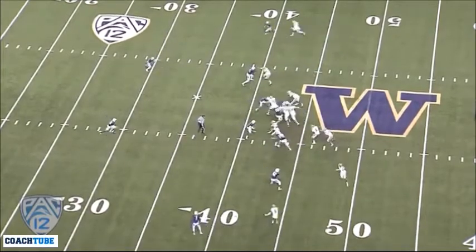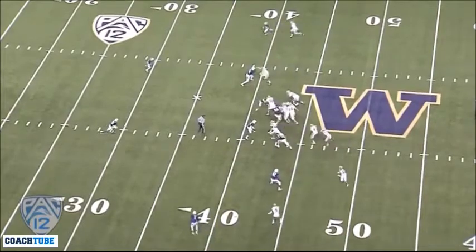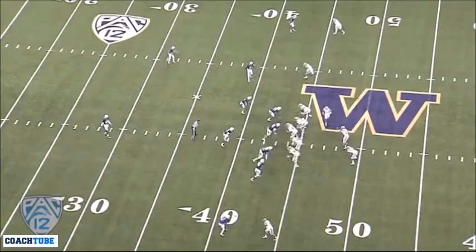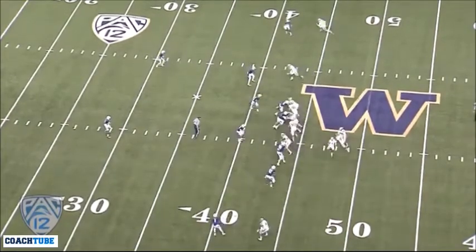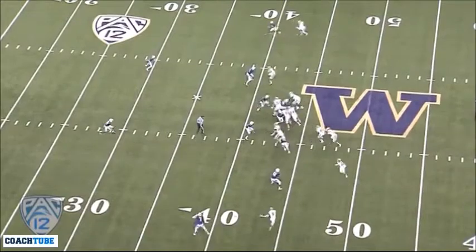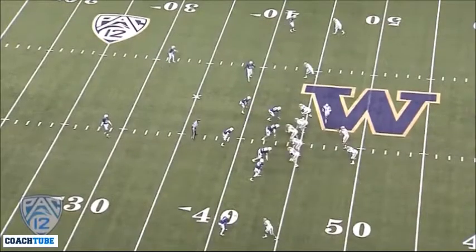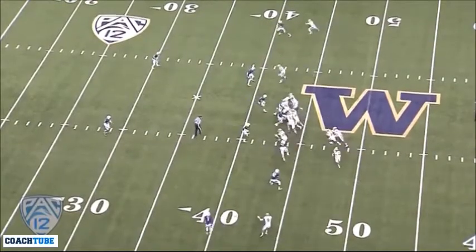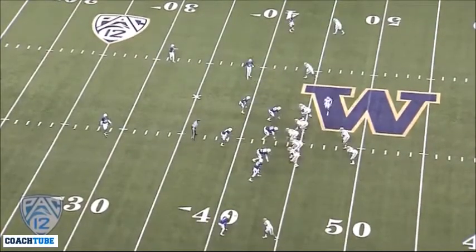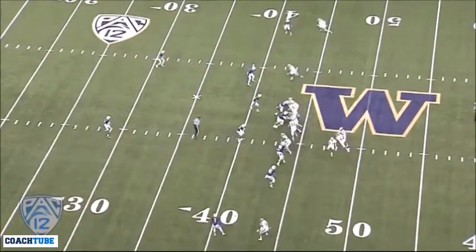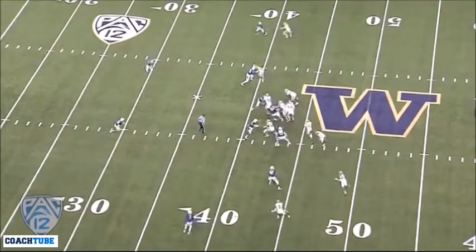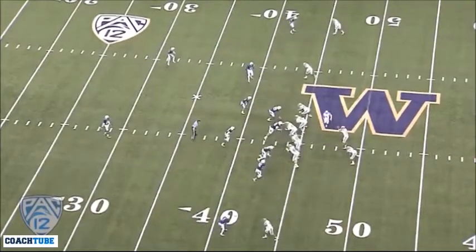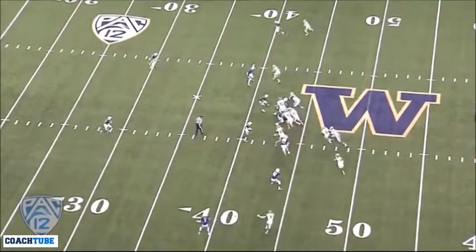Now the quarterback reads the end — either give or pull. If the end doesn't play the Comet screen, in other words he attacks the mesh, the quarterback should deal the ball to the Comet screen immediately. Our X receiver is in a Comet blocking scheme, which is an MDM — meaning he would block the most dangerous man between the corner and the safety.